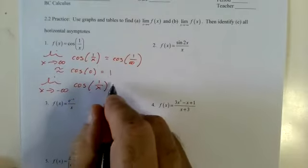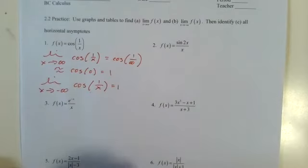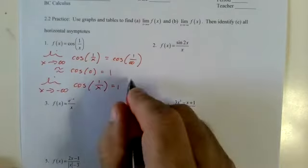Checking from both sides doesn't change anything, so it has a horizontal asymptote at y equals one.